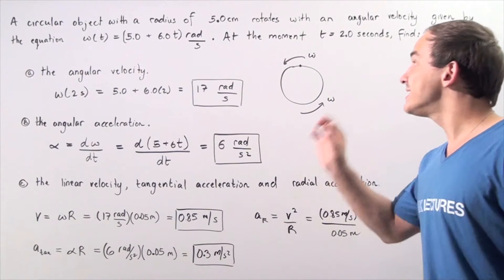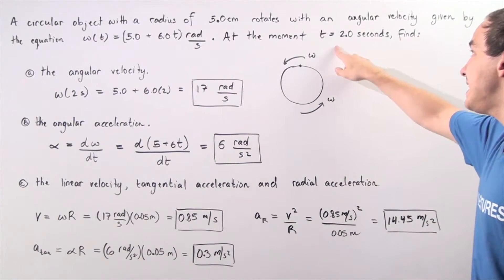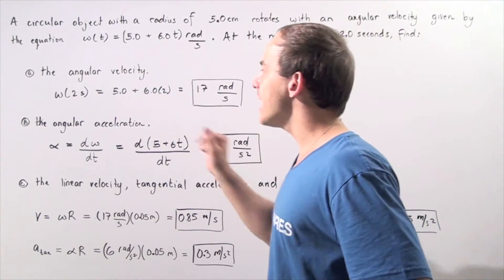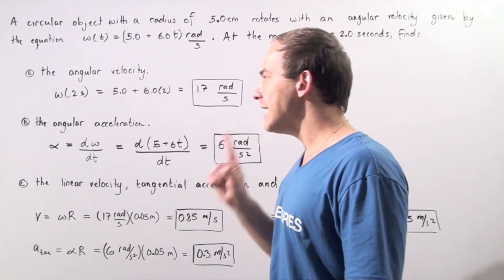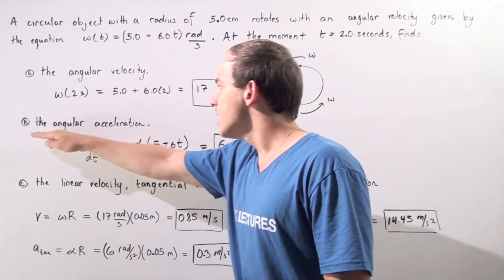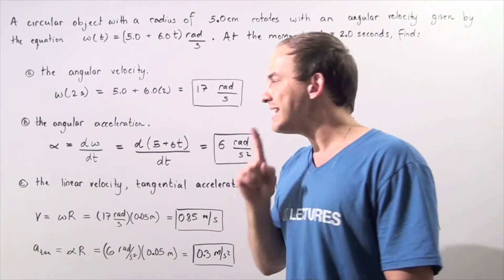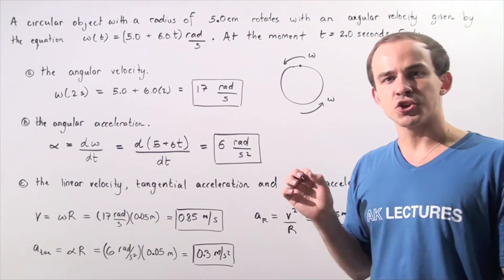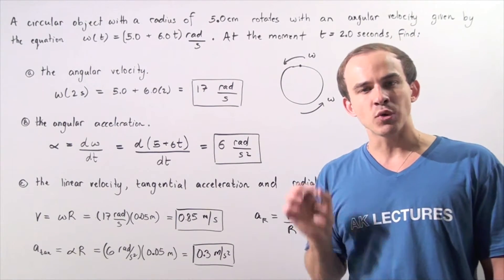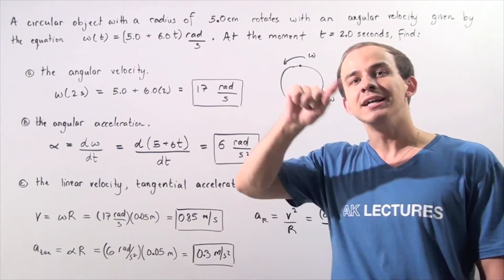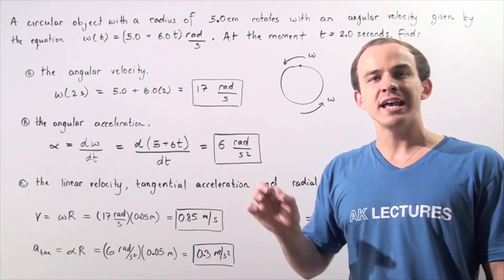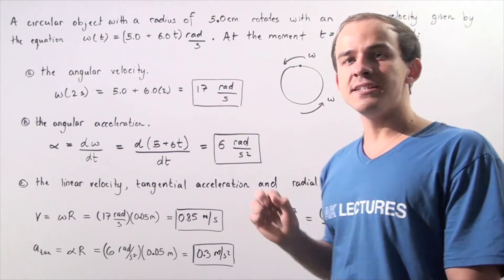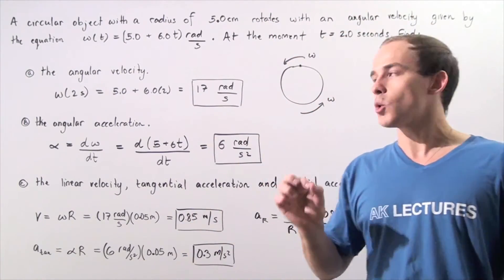At the moment t equals 2 seconds, we want to calculate: in part A the angular velocity, in part B the angular acceleration, and in part C the linear velocity, tangential acceleration, and radial acceleration at the point on the edge of our rotating object — that is, the point 5 centimeters from the axis of rotation.